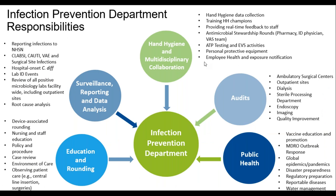Infection prevention department responsibilities. There are a lot of different ways to break down our responsibilities, and this is just the way I chose to display everything in a way that's easy to digest. The categories are education and rounding; surveillance, reporting, and data analysis; hand hygiene and multidisciplinary collaboration; audits; and public health. Under education and rounding, we do device-associated rounding — we check our lines, Foleys, et cetera — nursing and staff education, policy and procedures. We get policy questions all the time from different departments throughout the entire hospital. EVS may call and ask what's the procedure for HEPA filters.